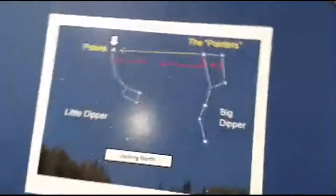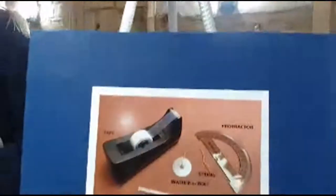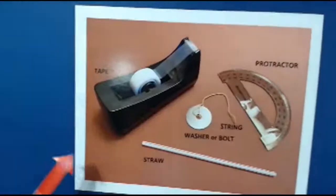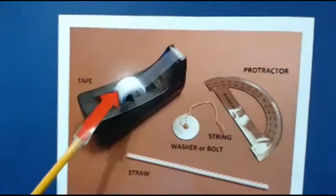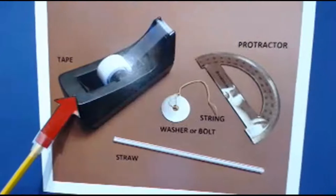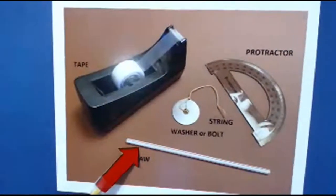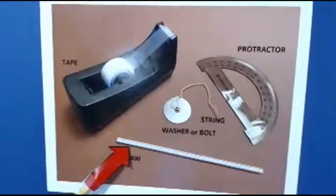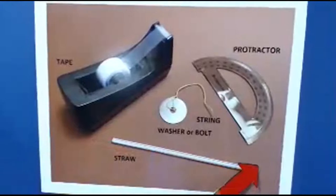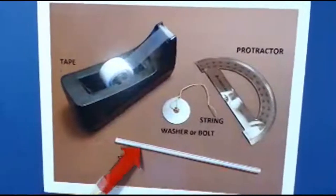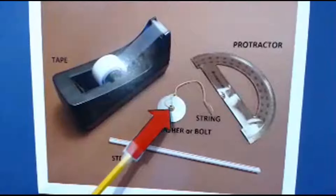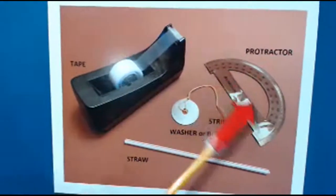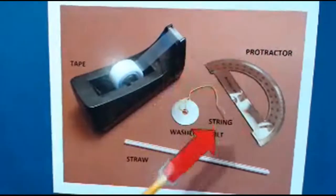Now let me show you how to build your own rudimentary sextant — very plain, but it'll do the job. You need four things: some tape, a straw (a big one like for a milkshake, because you'll actually look through it at the North Star), a washer with about six inches of string tied to it, and a protractor.